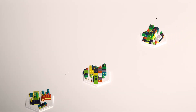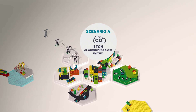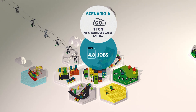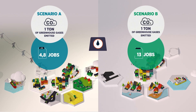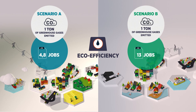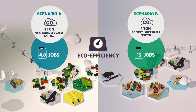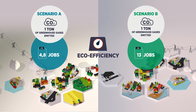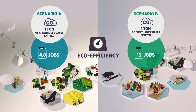For every ton of greenhouse gases emitted, 4.8 jobs are created in Scenario A and 13 jobs in Scenario B. Scenario B is therefore more than twice as eco-efficient as Scenario A for this category of impact. This concept must be applied to all services provided and impact categories.